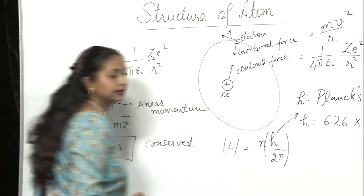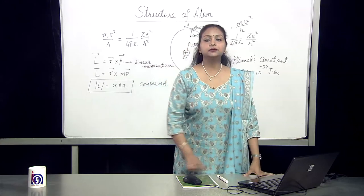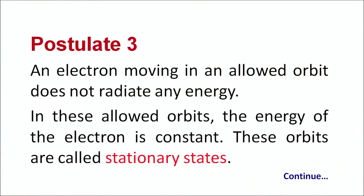The third postulate says that an electron moving in an allowed orbit do not radiate any energy. In these allowed orbits the energy of the electron is constant. These orbits are called stationary orbits.